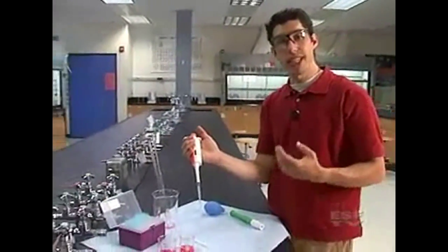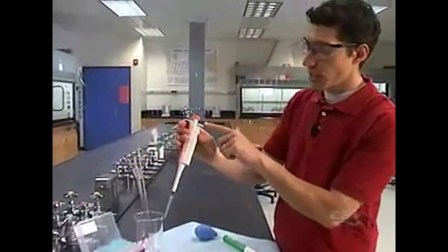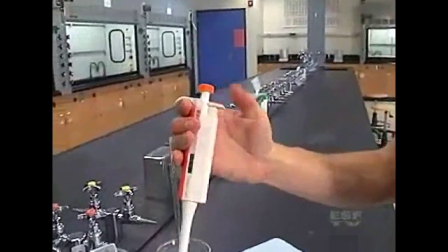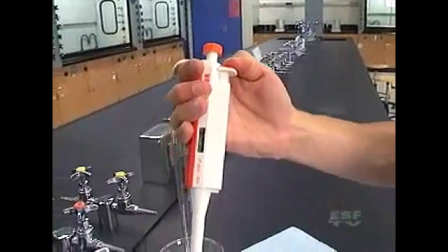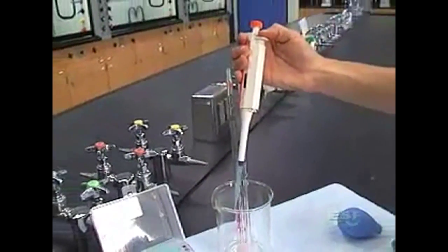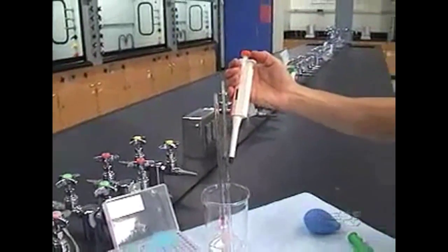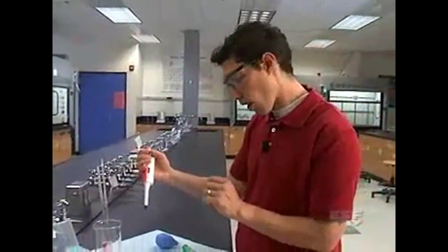When we're done with the micro pipette we need to get rid of the tip and that's using this little dispensing lever as I discussed and all you need to do is use your thumb to push down into your waste beaker and it gets ejected from the tip and you don't need to touch it at all.